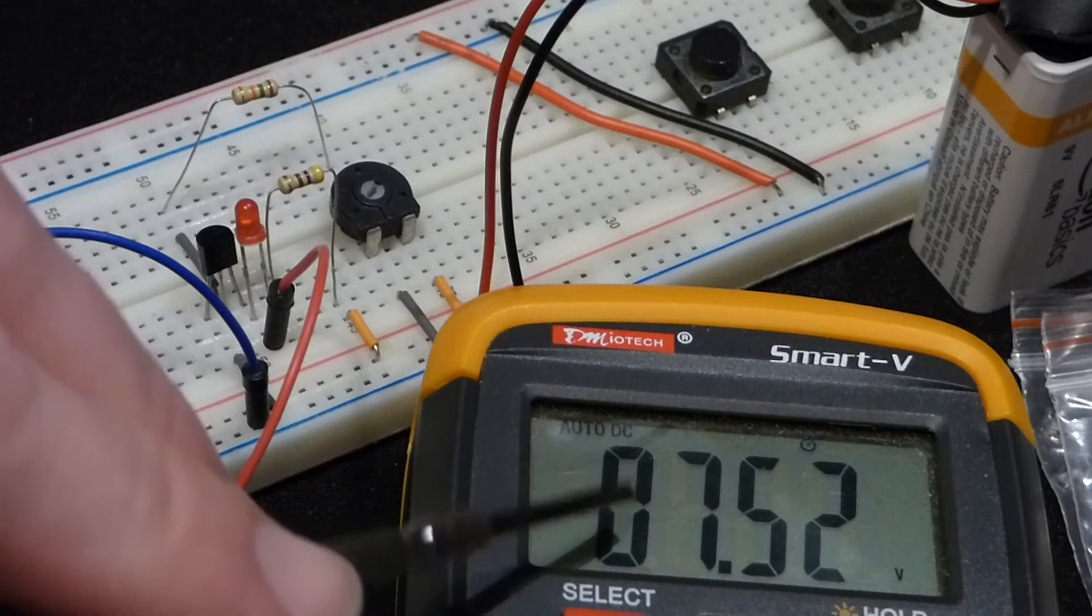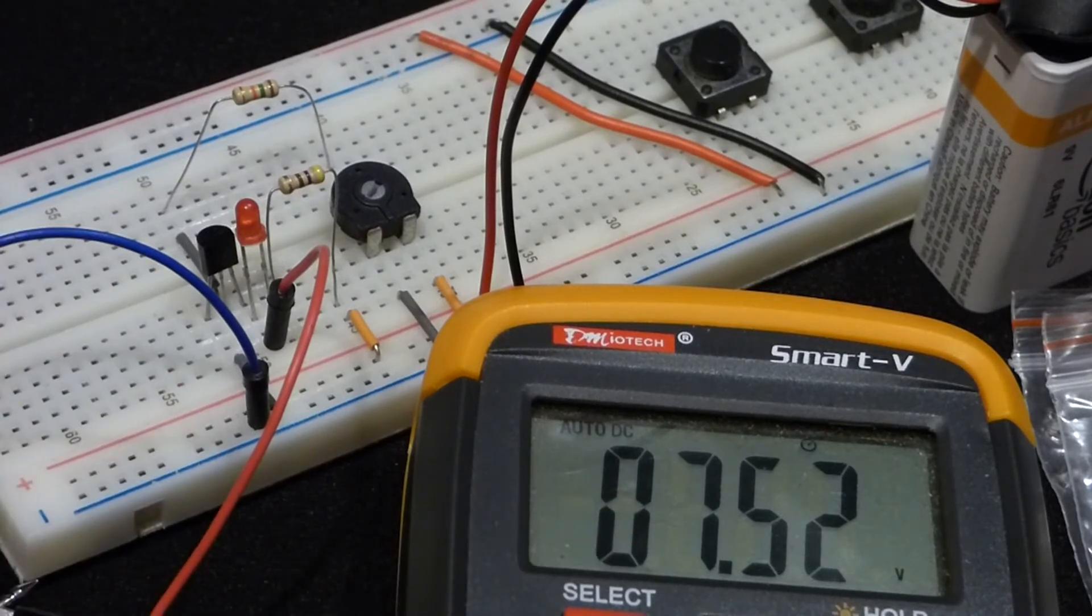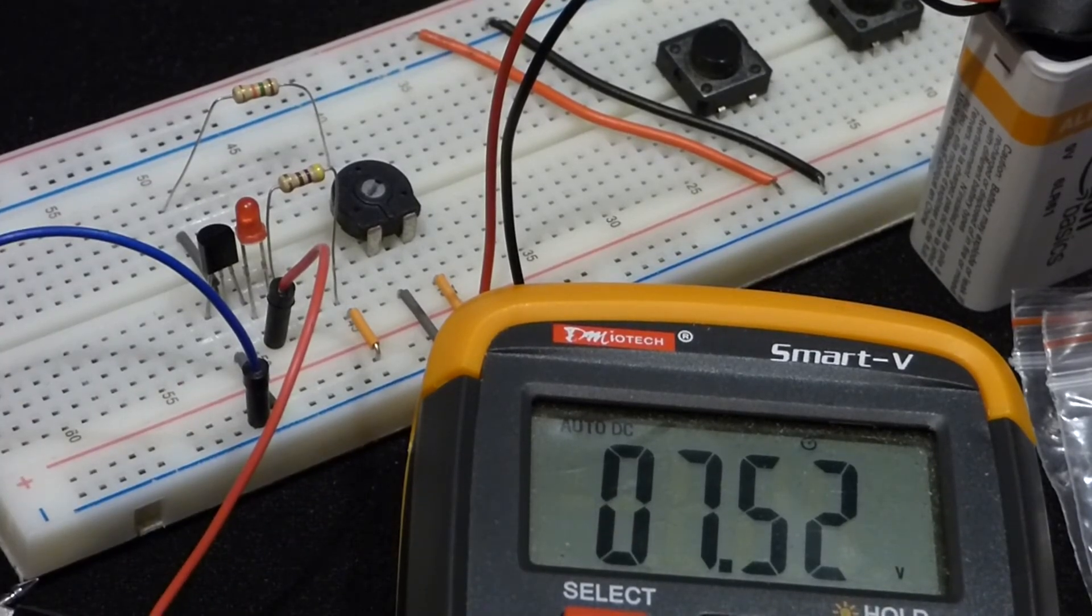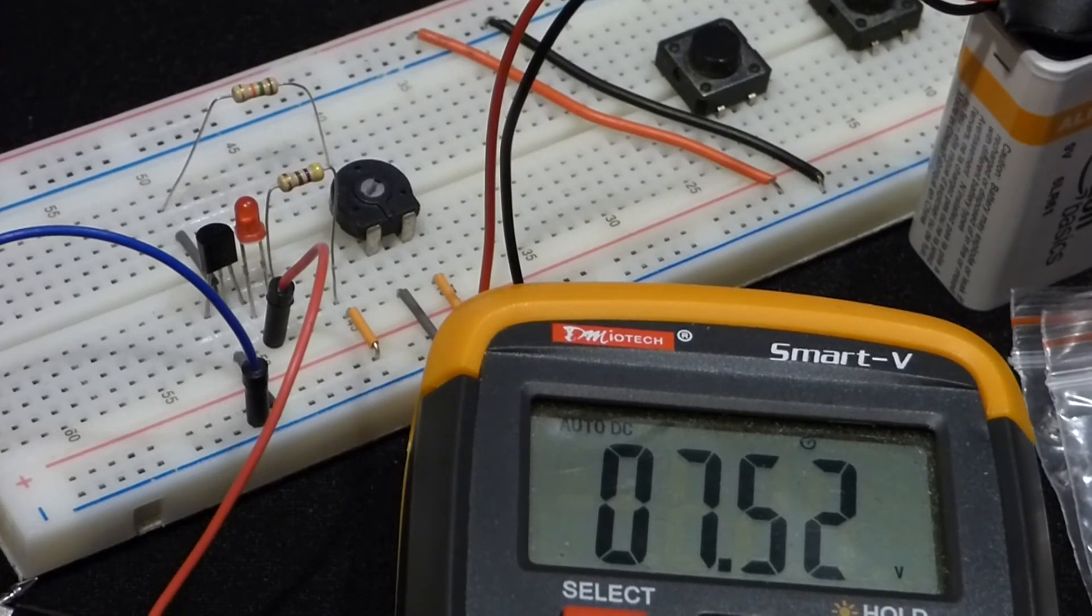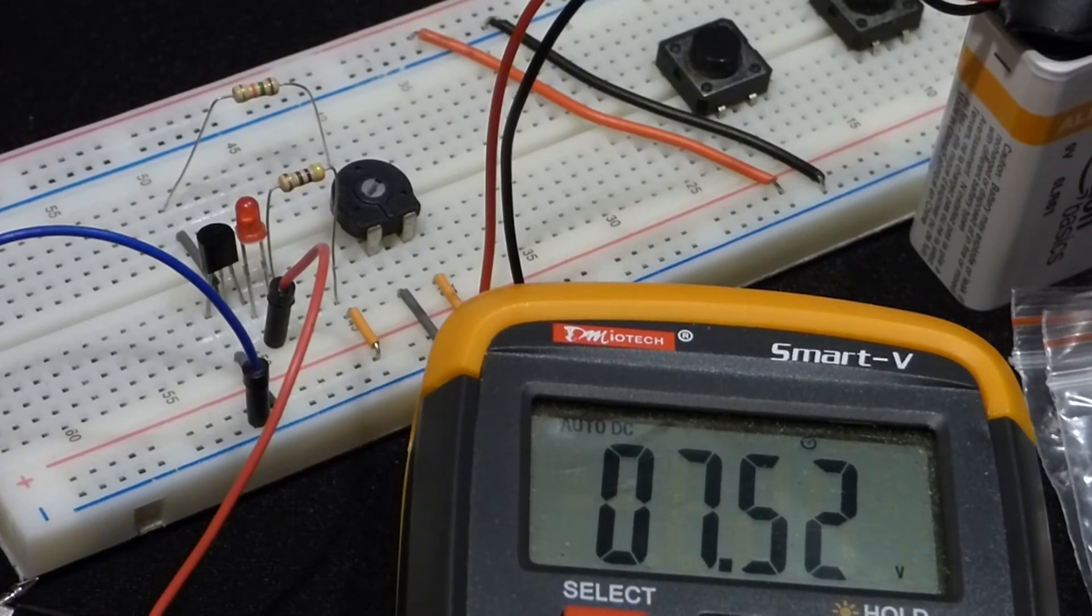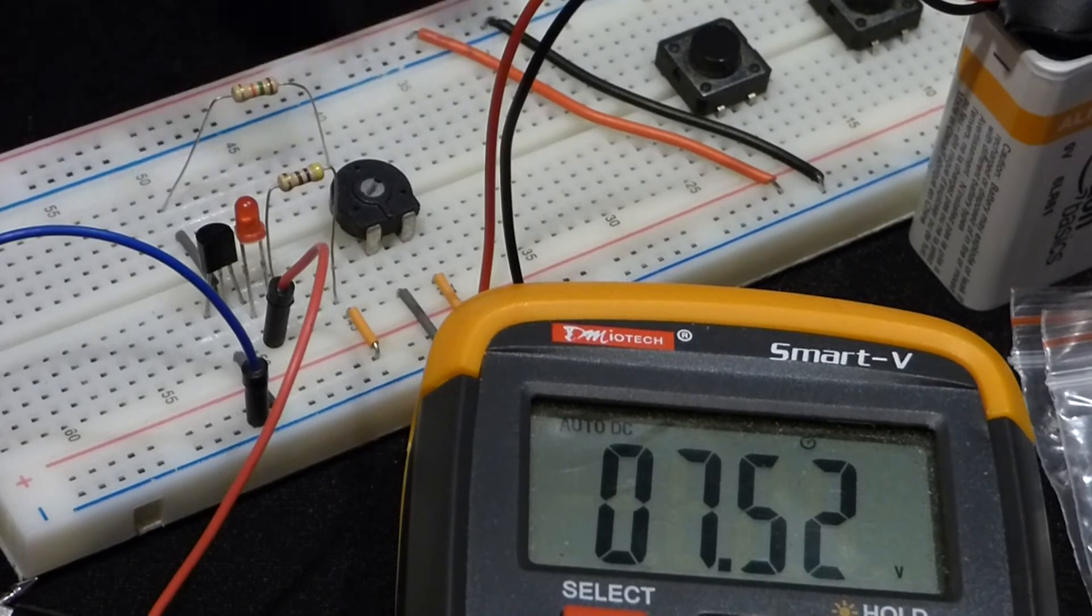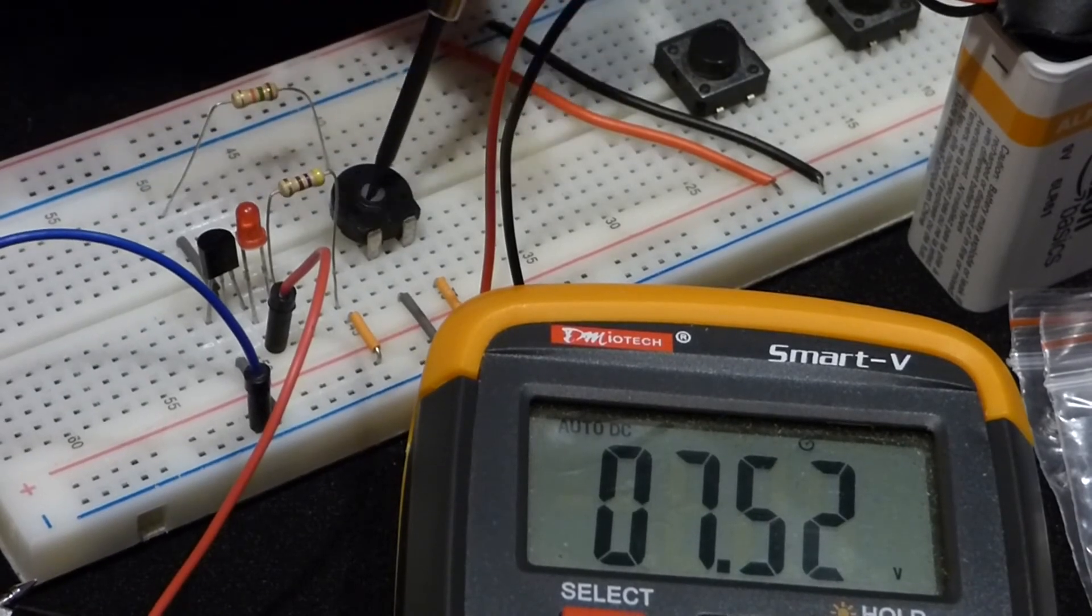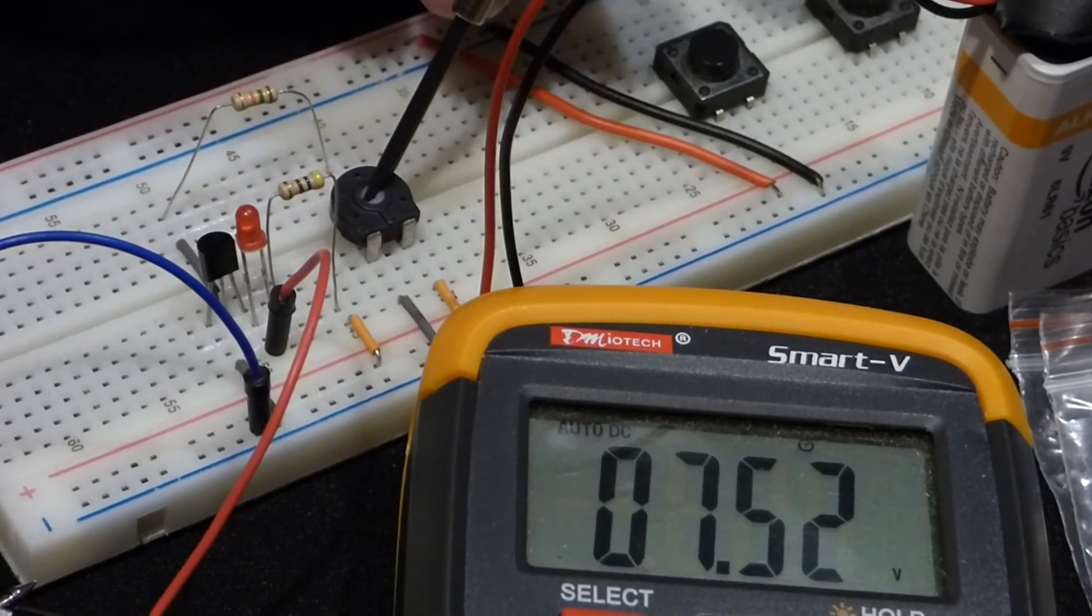But in any case, right now as I said we have the full voltage we're going to have. That's because the transistor is not conducting. The voltage can build up since the current has nowhere to go. So we're going to turn this up. That's the cutoff region right there.